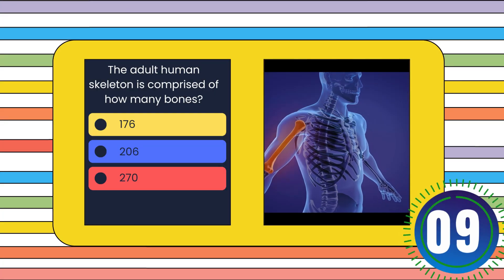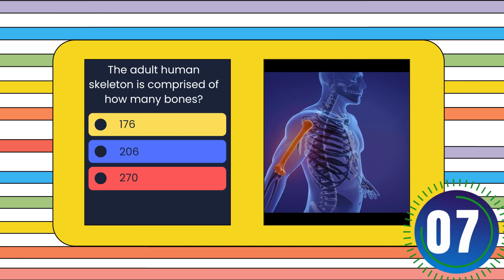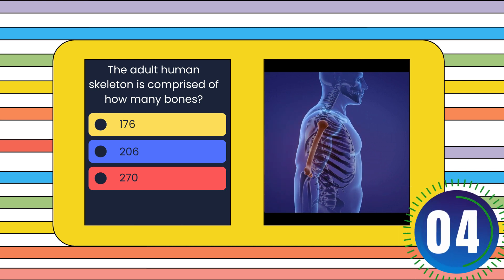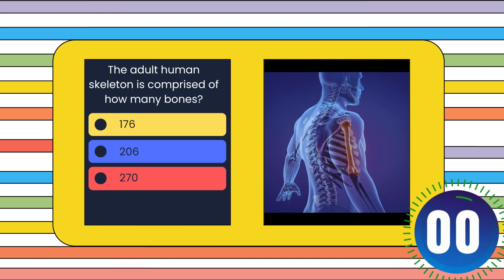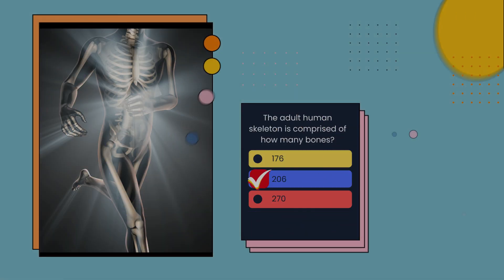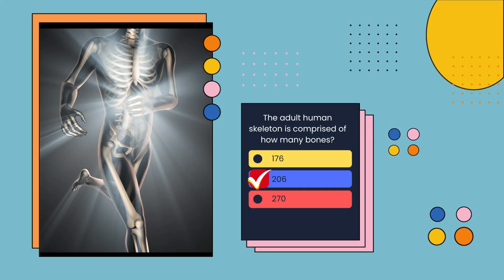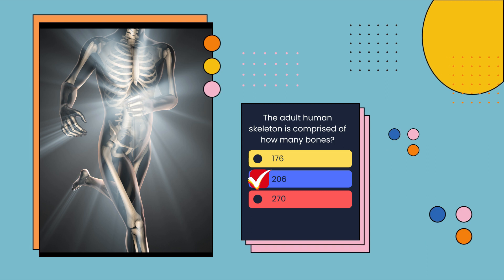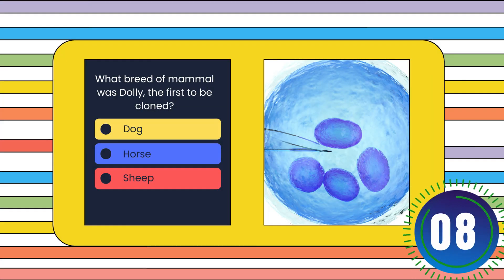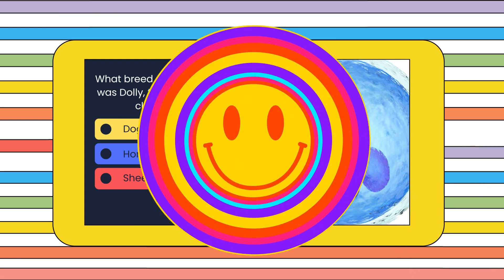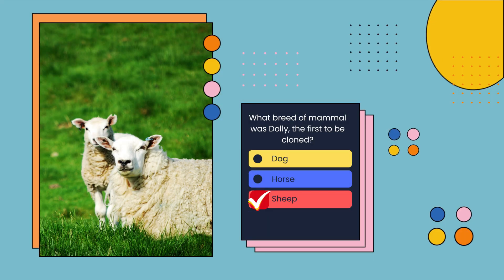The adult human skeleton is composed of how many bones? 176, 206, or 270? 206. What breed of mammal was Dolly, the first to be cloned? Horse, cow, or sheep? Sheep.